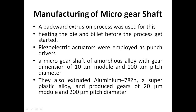For manufacturing of the micro-gear shaft, a backward extrusion process was used. The die and billet are heated before the process begins. Piezoelectric actuators were employed as punch drivers. A micro-gear shaft of amorphous alloy with a gear dimension of 10 mm module and 100 mm pitch diameter was produced. Aluminium 78ZN, a super plastic alloy, was also extruded to produce gears of 20 mm module and 200 mm pitch diameter.